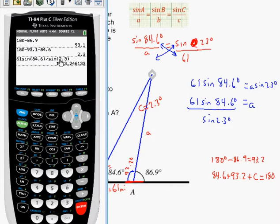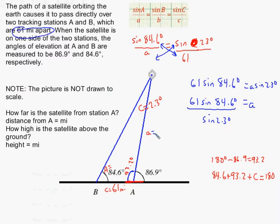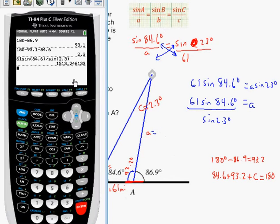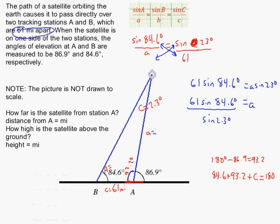I get the answer here that little a must be in miles because this was given in miles. It was 1,513.246. I don't know if it said how many decimal places to round to, so I'll just type in as many as I can. That was 1,513.246 miles.